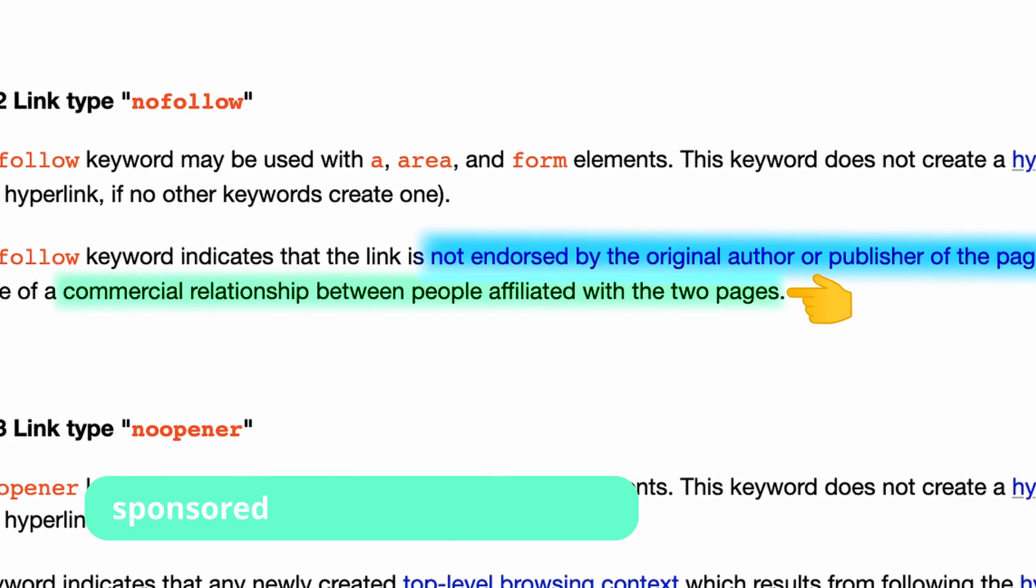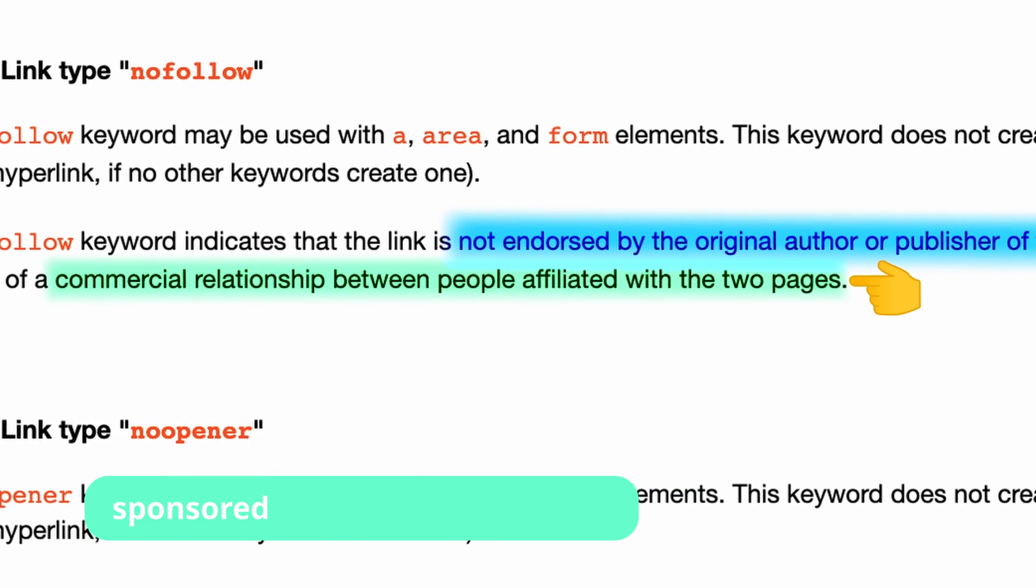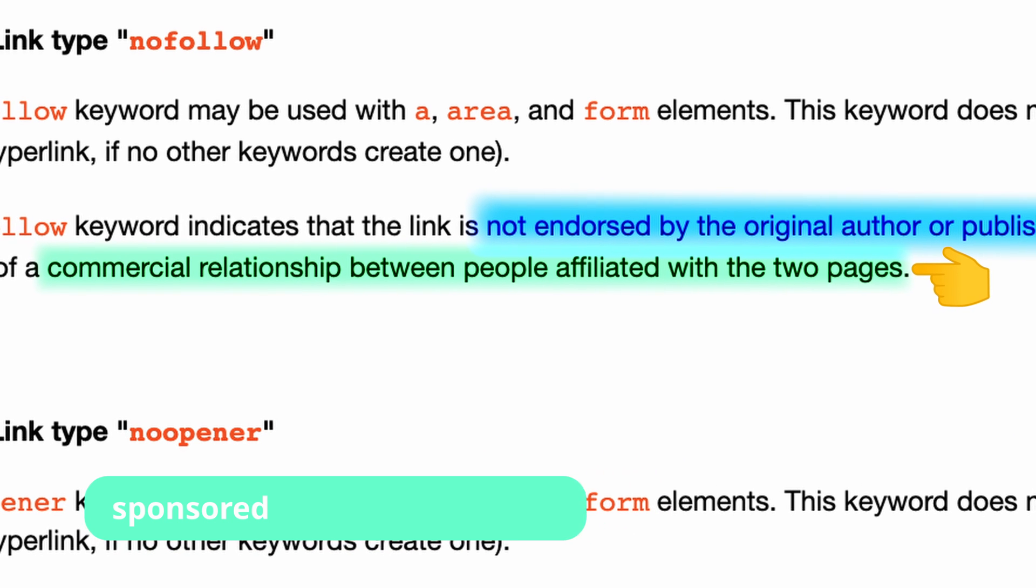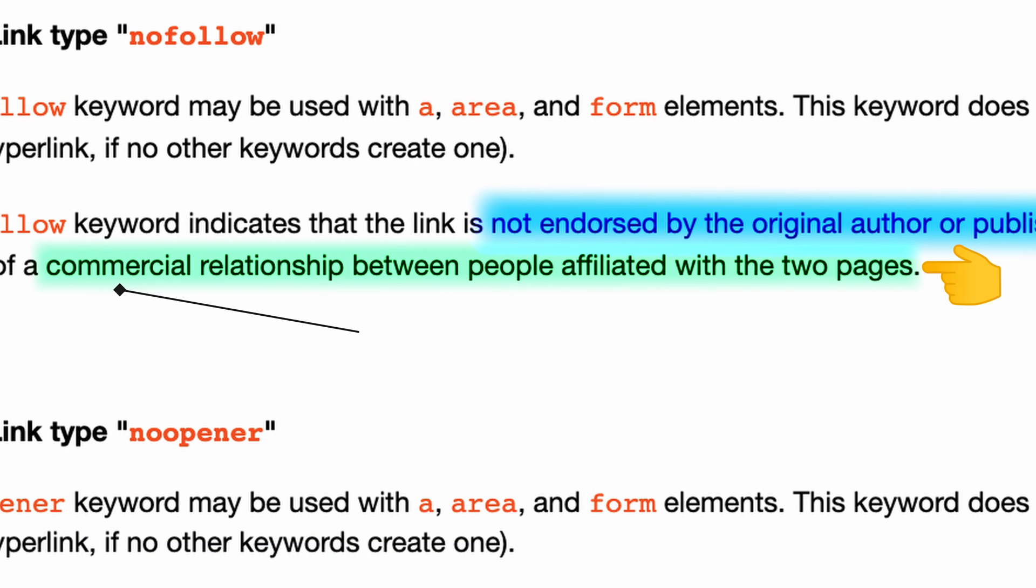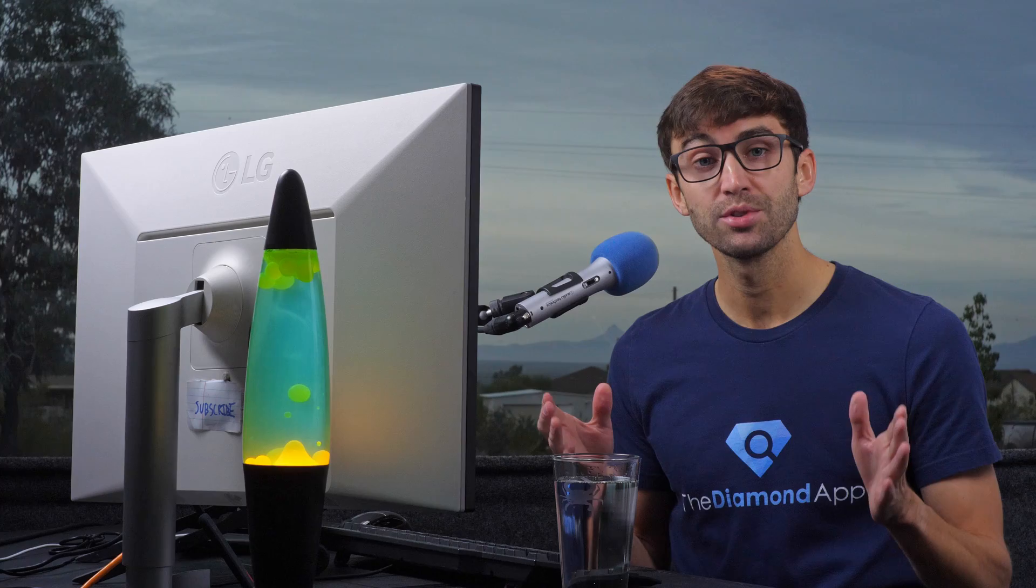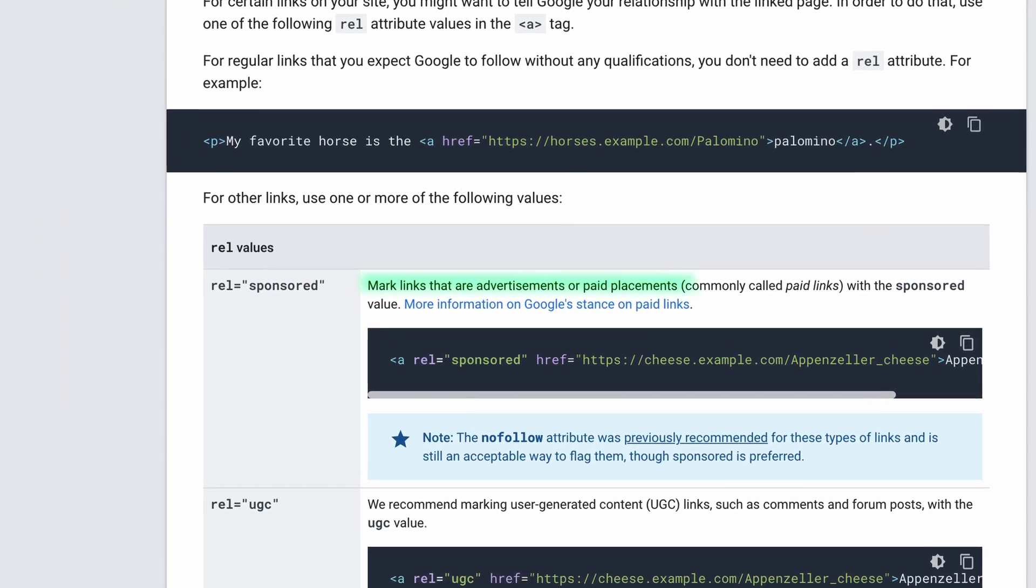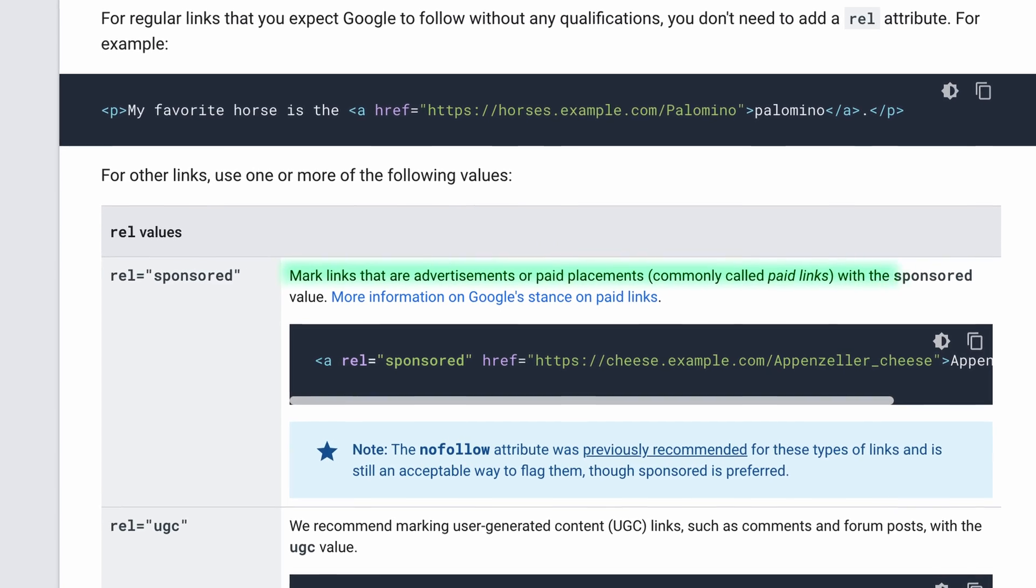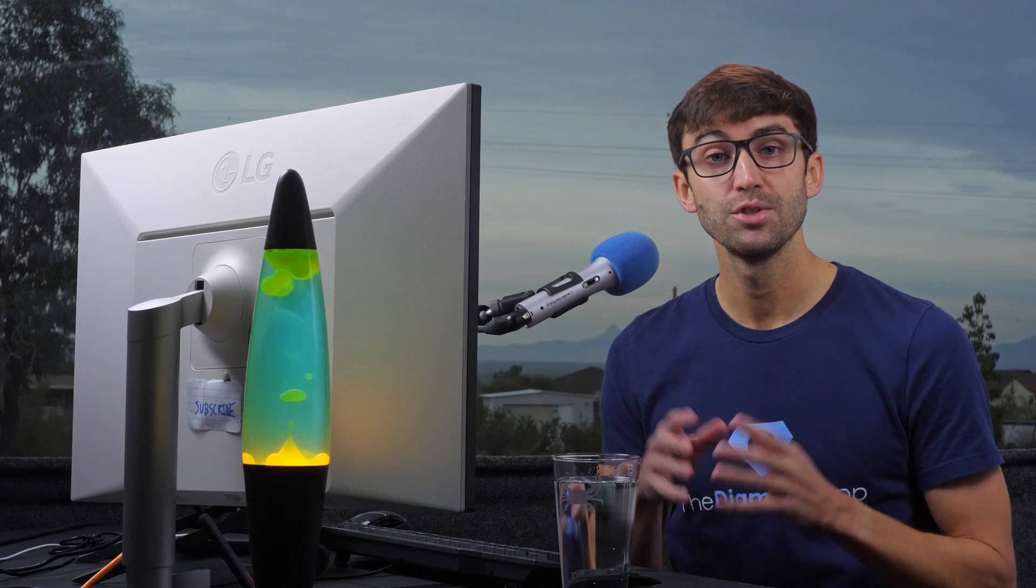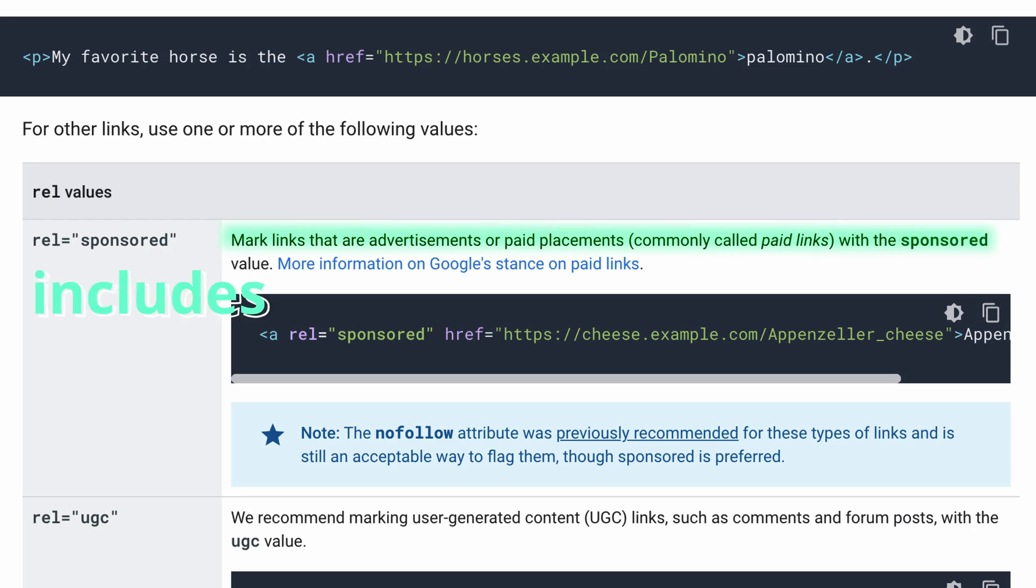Google pretty much took the commercial relationship part of the HTML standard definition for nofollow links and created another rel value called sponsored. In Google's own words, mark links that are advertisements or paid placements, commonly called paid links, with the sponsored value. In addition to ads and paid links, sponsored links also include affiliate links.